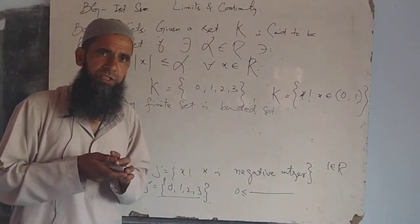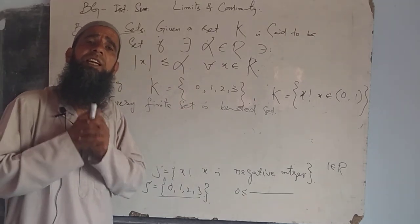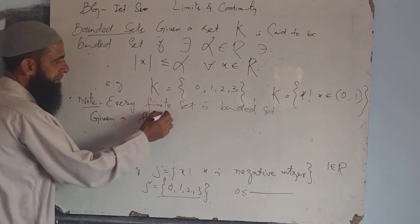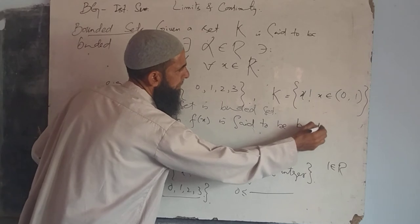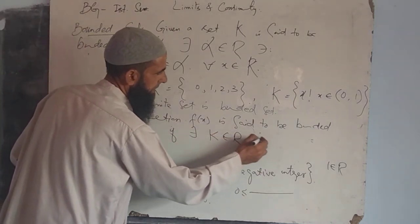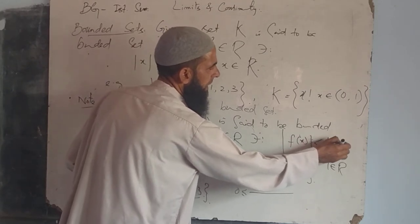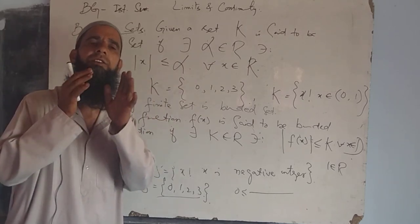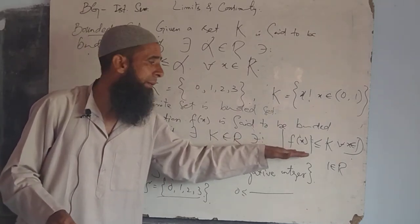Now we will discuss the next definition, that is bounded function. Given a function f(x), f(x) is said to be a bounded function if there exists K in R such that the modulus of f(x) is less or equal to K for all X belonging to the domain of the function.